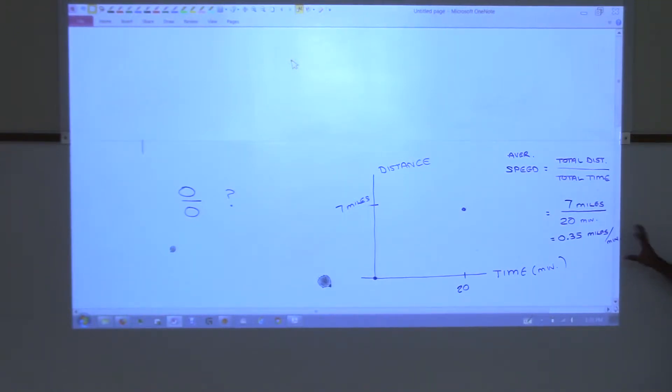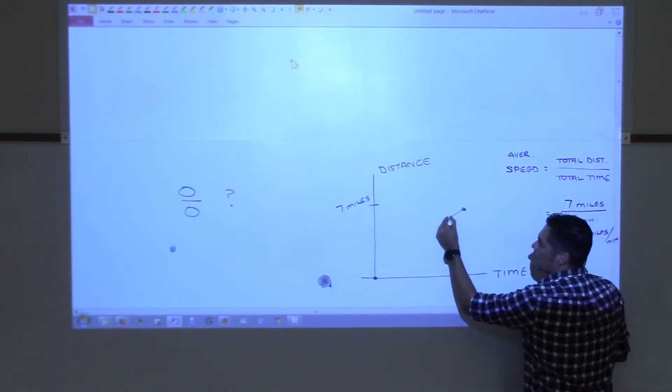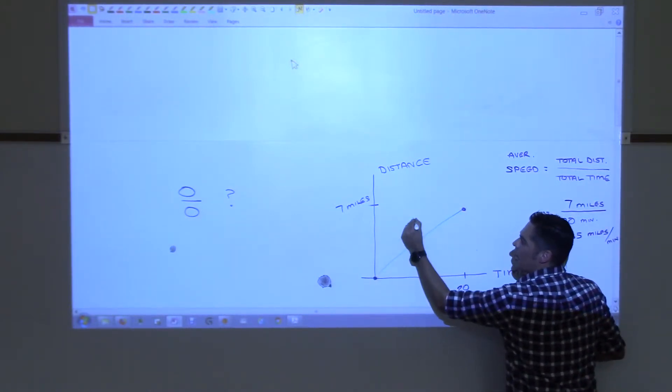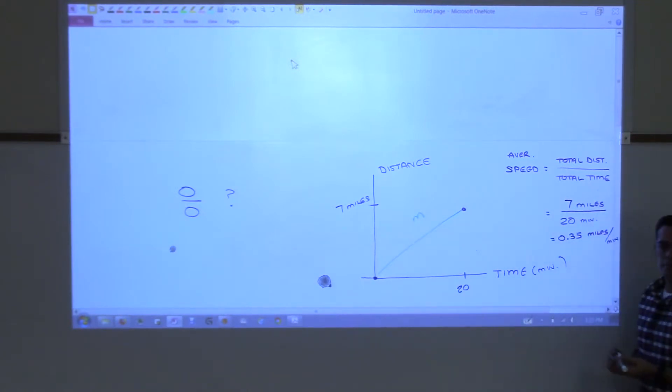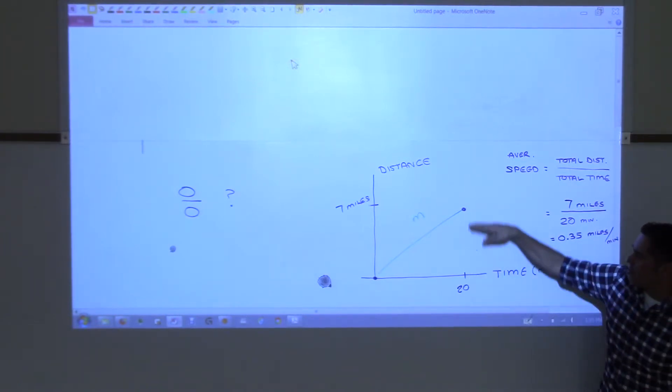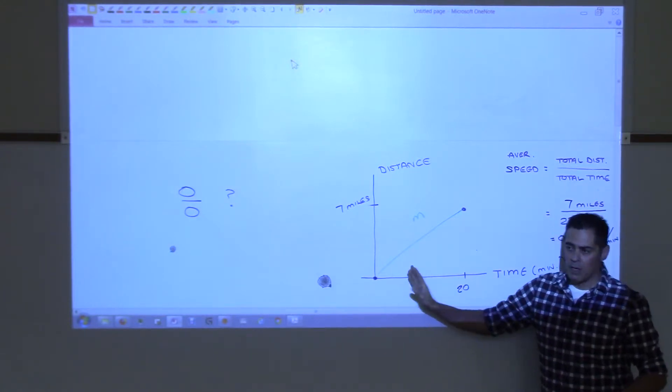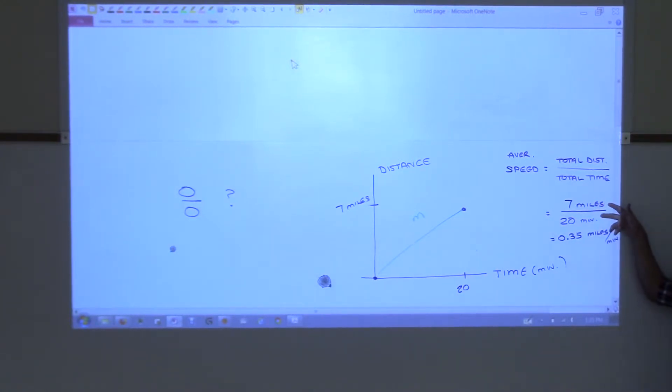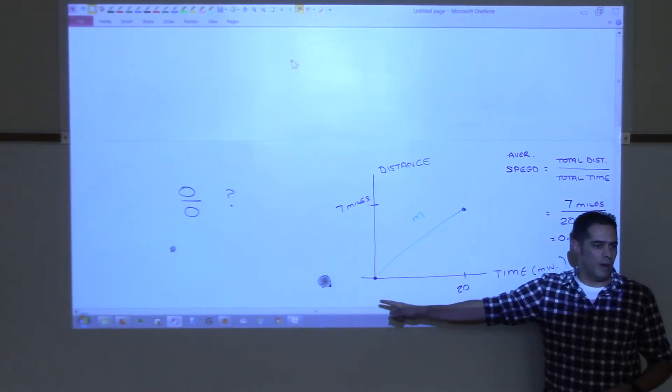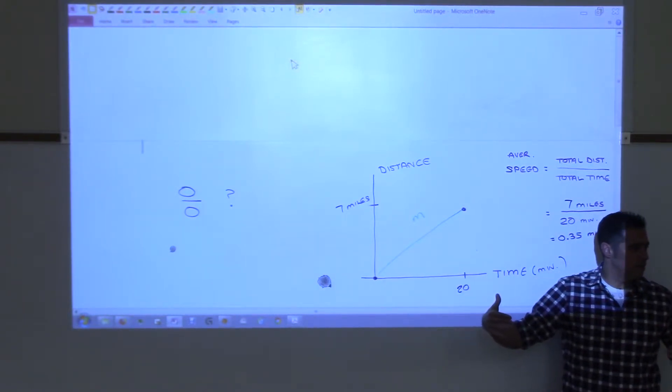Alright, let's get back to this though. Your average speed is this over this, right? But geometrically, isn't that just the slope of that line? The slope of that line. The slope of a line connecting two points is rise divided by run, right? So your rise here is seven, and your run here is 20. So this computation is the same as the slope of the line connecting the two points. Do we all agree with that?